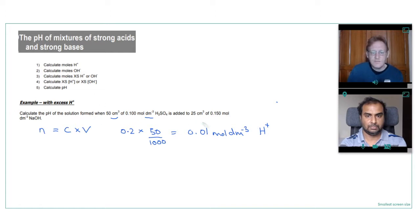We would get 0.01 moles per decimeter cubed of hydrogen ions. Now just do the same for the sodium hydroxide. Concentration 0.15. Every mole of sodium hydroxide would give us one mole of hydroxide ions. So the concentration is exactly the same. This time times by 25 over a thousand. And that will equal 0.00375.